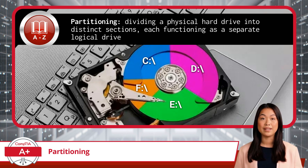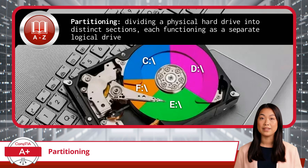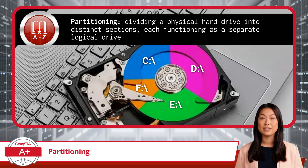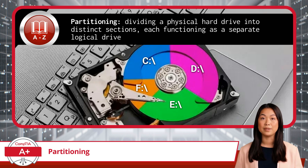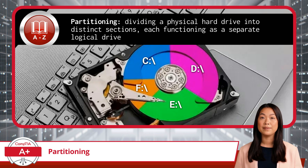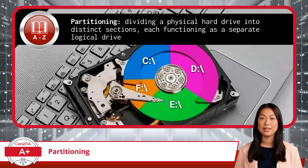Partitioning a physical hard drive involves dividing it into distinct sections, each functioning as a separate logical drive. This process is essential for organizing data and managing storage efficiently. When you partition a drive, you're working at the drive level, creating a partition table that keeps track of the locations and sizes of each partition. Two primary partitioning schemes are the Master Boot Record, or MBR, and the GUID Partition Table, or GPT.